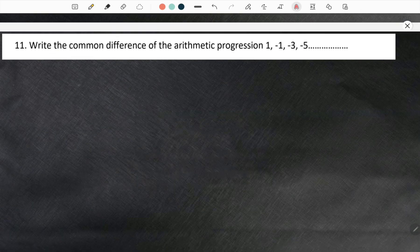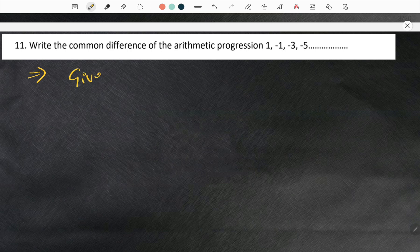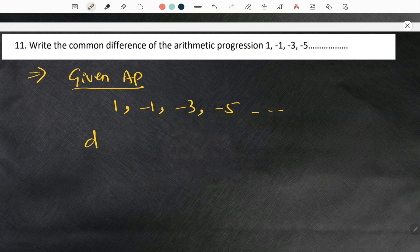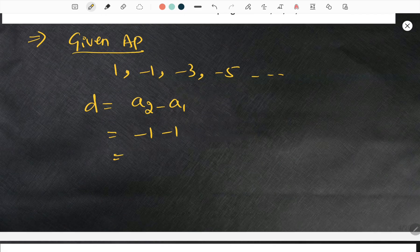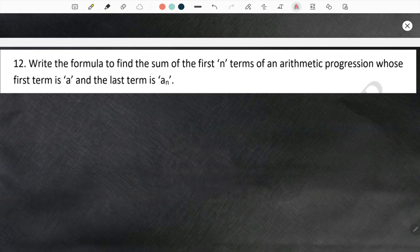Moving forward to the eleventh question. Write the common difference of the arithmetic progression. So given AP is going to be 1 comma minus 1 comma minus 3 comma minus 5 dot dot dot. Common difference is equal to second term minus first term, that is minus 1 minus 1, which is minus 2.